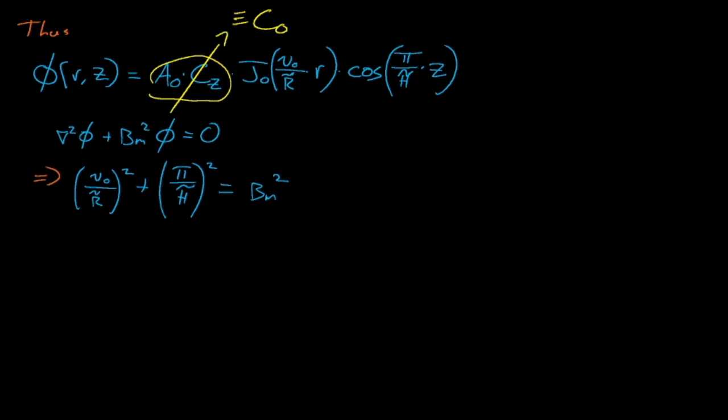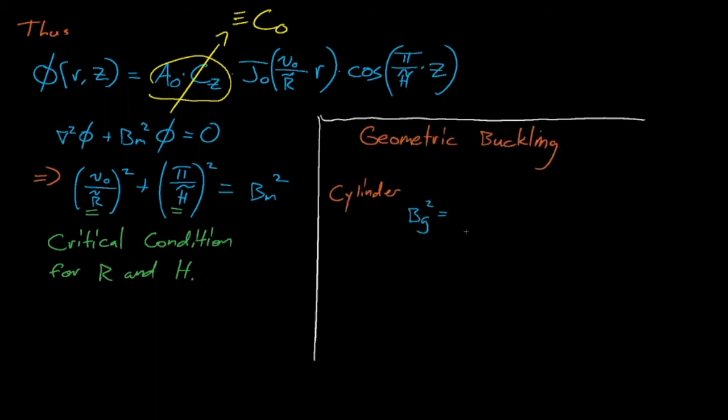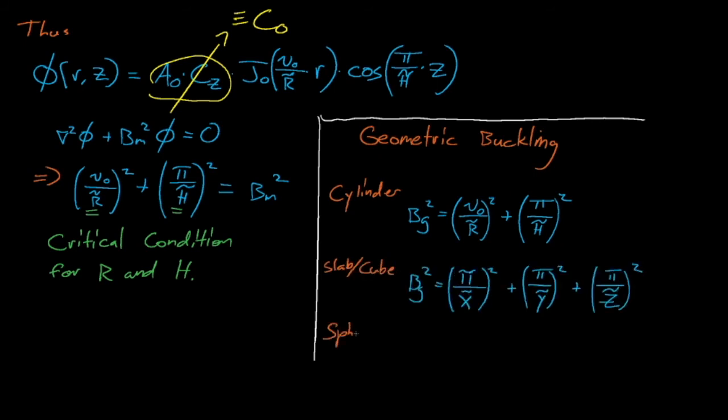Based on this expression, we can infer that the geometric buckling for a cylindrical reactor equals nu0 divided by r tilde squared plus pi divided by h tilde squared. And so, as we said in our previous lecture, we see that our geometric buckling is once again shape-dependent, and a cylinder will see a different amount of buckling compared to an infinite slab, a cube, or a sphere whose geometric bucklings are given here.